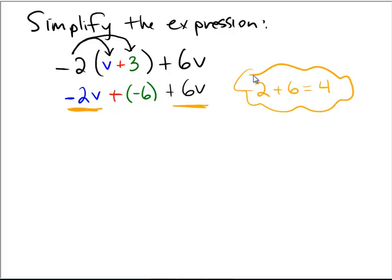Let me put that in a little cloud to the side. So when I actually do that in this problem, the negative 2v plus the 6v would come out to be a 4v because of the variable.